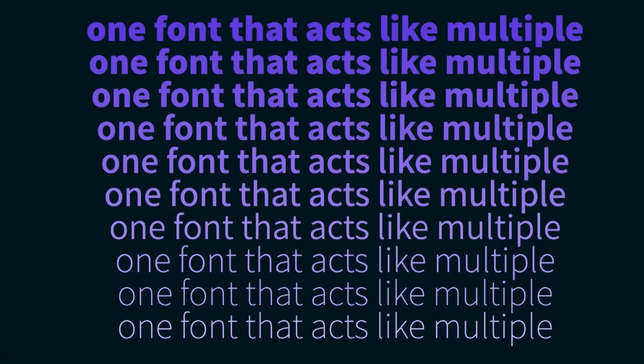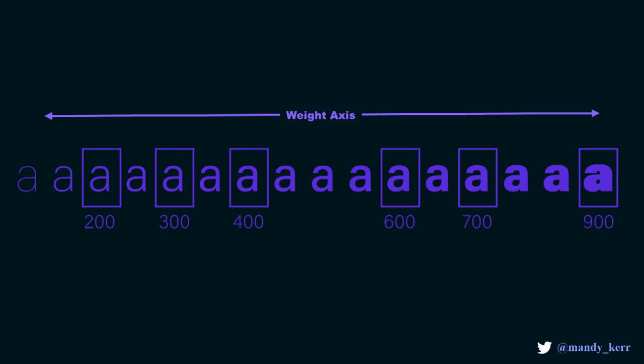The best way that I can describe a variable font is that they're one font file that acts like multiple fonts. So where you might have had 10 different font weights, for example, in separate files, all this data now exists in one. The way this is created is the font designer creates a style axis in the font itself — for example, a weight axis. And where you would have maybe a 400, a 900, and a 700 weight, that all exists along that axis. The benefit of a variable font, and what makes them really special, is that you don't just have those individual master weights — you have access to all of the values in between, because the axes can be interpolated.